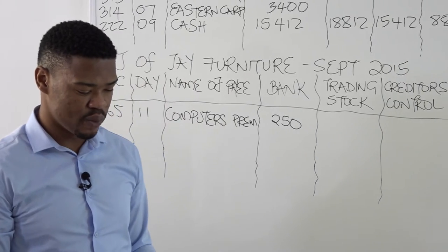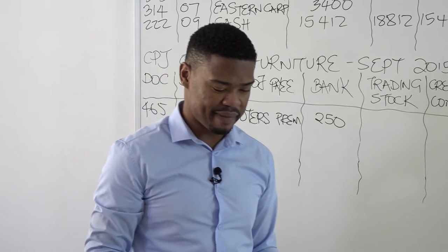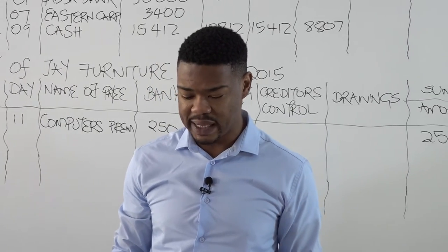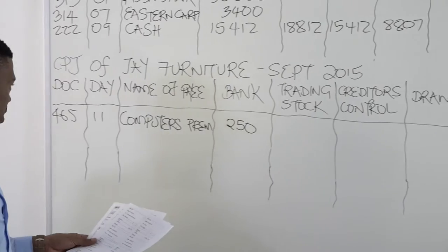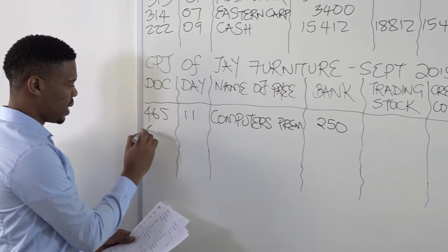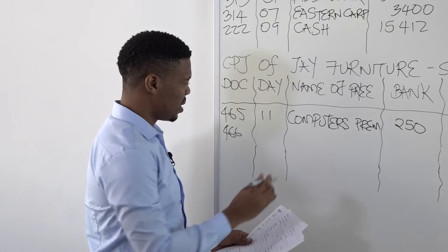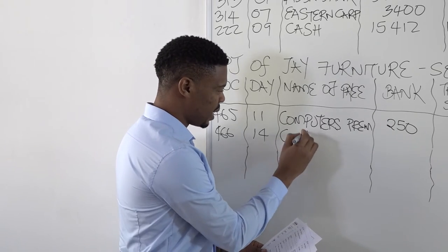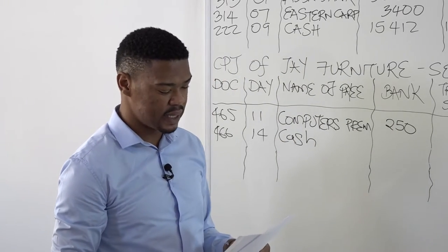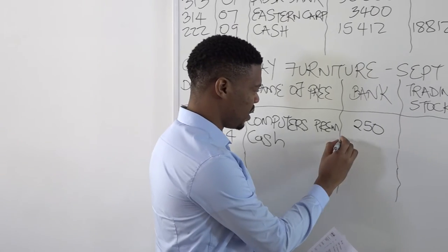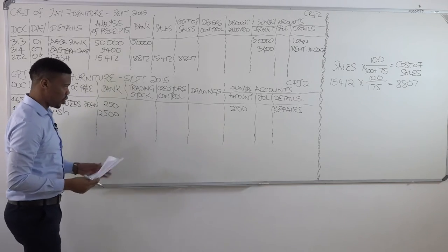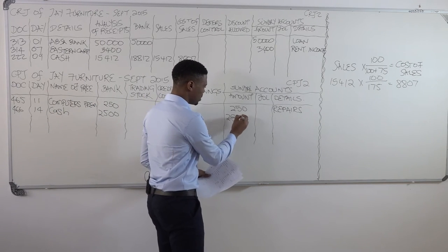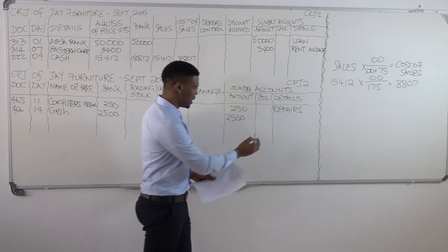The next example is check counterfoil number 466. Check counterfoil 466 was a cash check issued for wages: 2,500. This was issued on the 14th. So I will enter document number 466, date the 14th. This was a cash check issued for wages, amount 2,500. If we look at our additional columns there's no wages, so I will take it straight to Sundries: 2,500, and the details for that is wages.